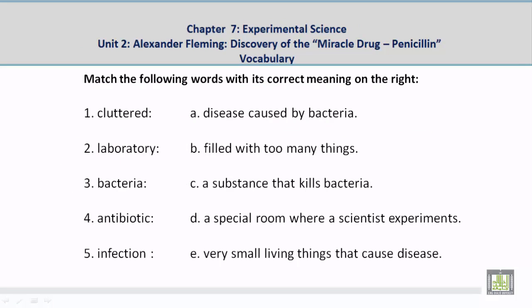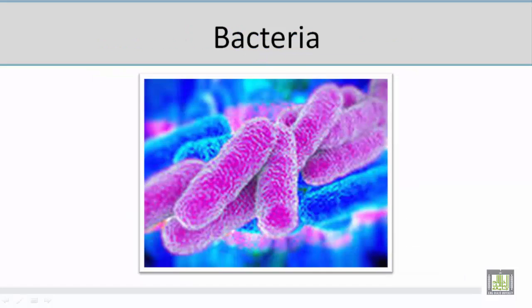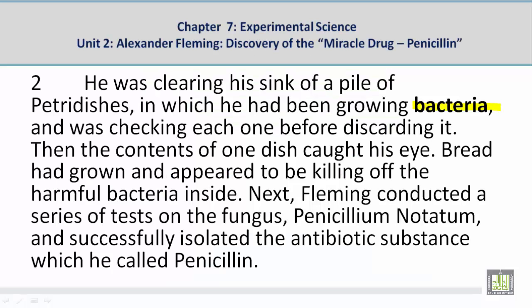Number 3: Bacteria. The correct meaning is E — very small living things that cause disease. Now let's take a look at a picture related to the vocabulary word "bacteria." Student: I see here small things, like different types of this thing, and this thing called bacteria — and they cause diseases. Now let's look at a paragraph: He was clearing his sink of a pile of petri dishes in which he had been growing bacteria, and was checking each one before discarding it.